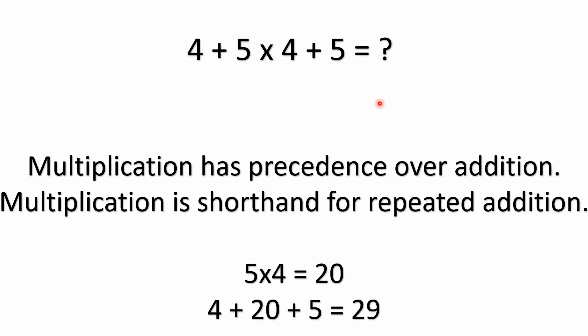All right. So if you remember from primary school in the UK, or elementary school in the US, multiplication has precedence over addition. There's a thing called the order of operations, and you can think of multiplication as just being shorthand for repeated addition. The way you solve this: multiplication has precedence, so you take 5 times 4, which equals 20. Then it's 4 plus 20 plus 5 equals 29. So the correct answer to this problem is 29.